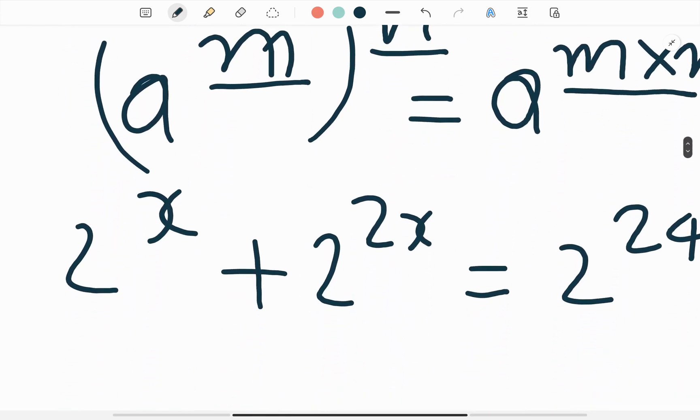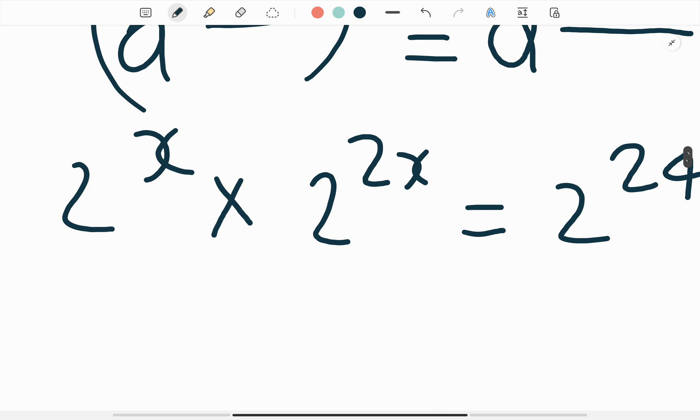So here is 2 to the power x multiply 2 to the power 2x is equal to 2 to the power 24. Now we know when a to the power m multiply a to the power n, then we write as a to the power m plus n.